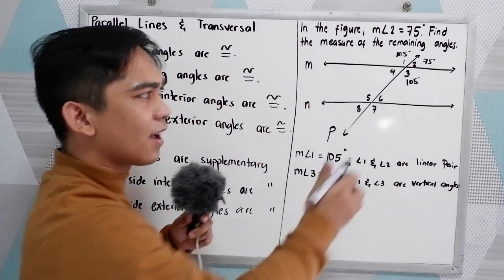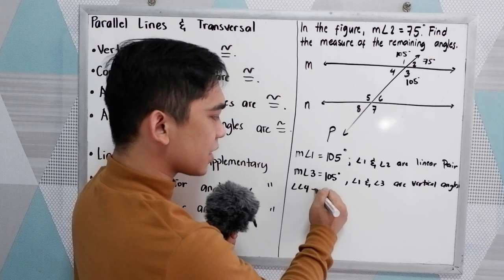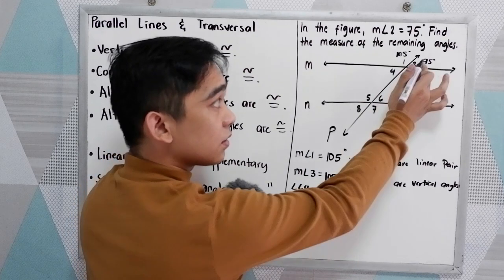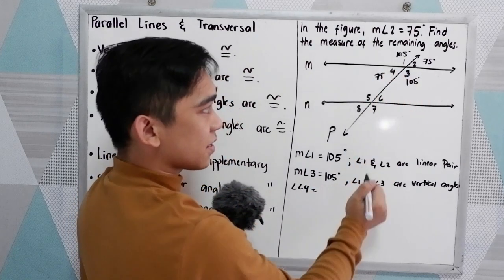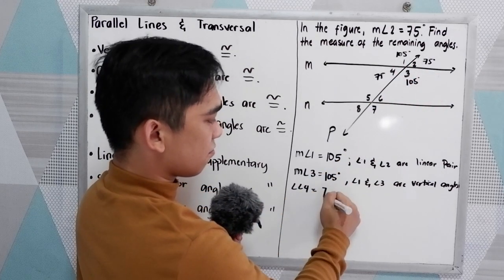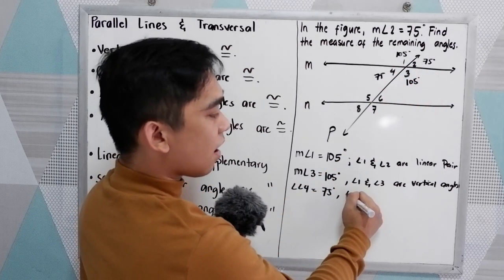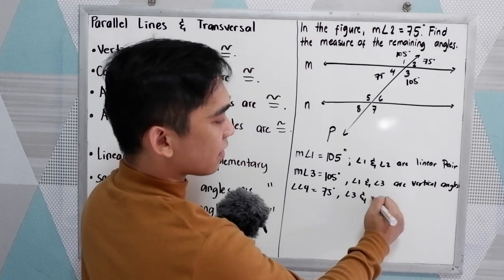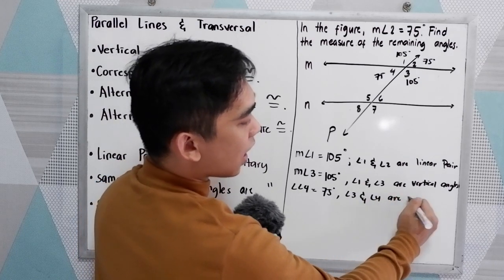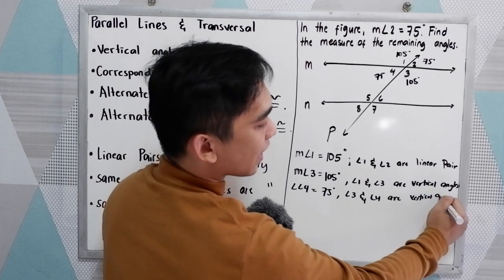Next, angle 4. Measure of angle 4 is equal to 75 degrees. Reason: angle 3 and angle 4 are vertical angles.